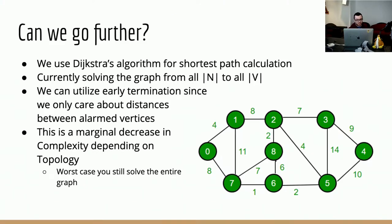The next thing I looked at was improving efficiency in the shortest path computations. The implementation we're using solves the graph from a given vertex to all other vertices. Technically, we should be able to stop solving as soon as we've found the shortest path from the source vertex to all other vertices with faults, since we're never asking for the distance between a faulted vertex and a non-faulted vertex. However, this is only a marginal improvement — you'd likely still have to compute a large portion of the graph depending on the topology.